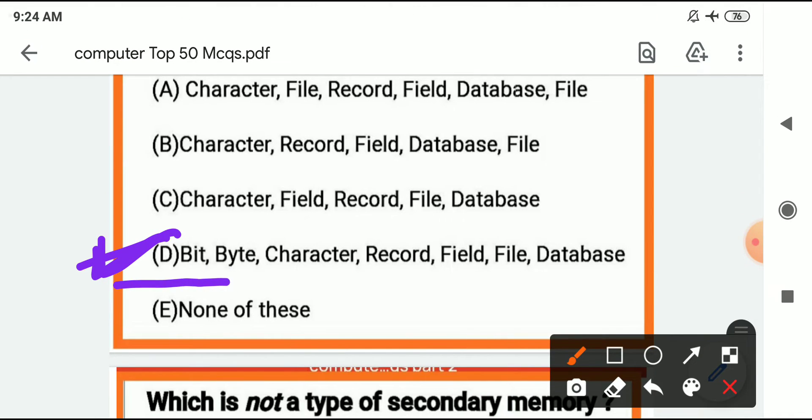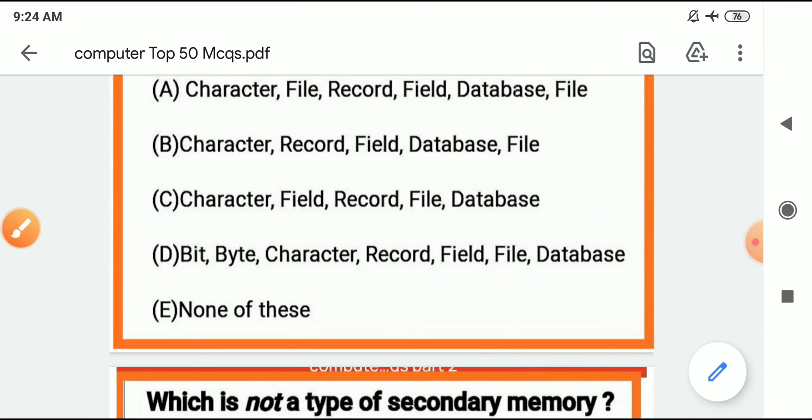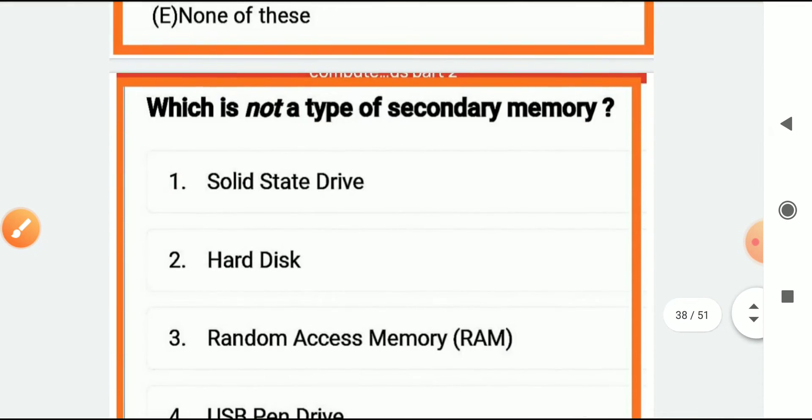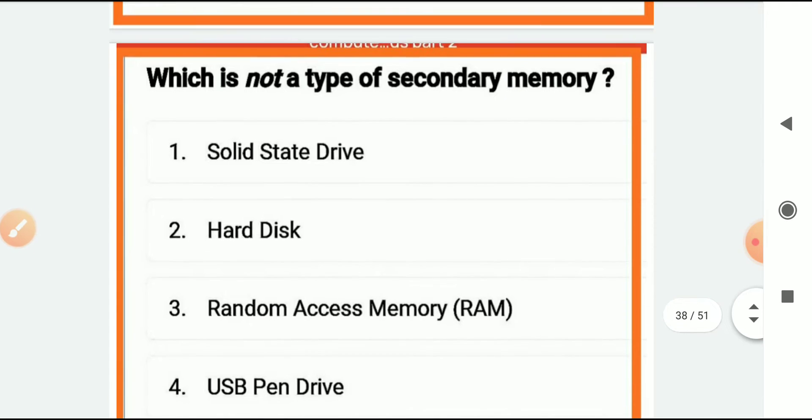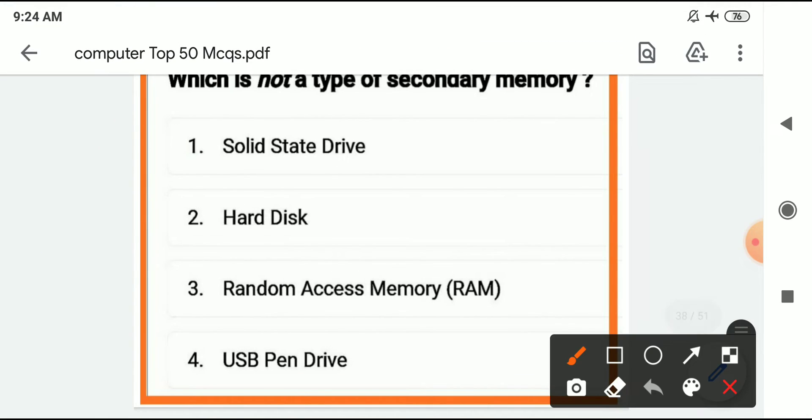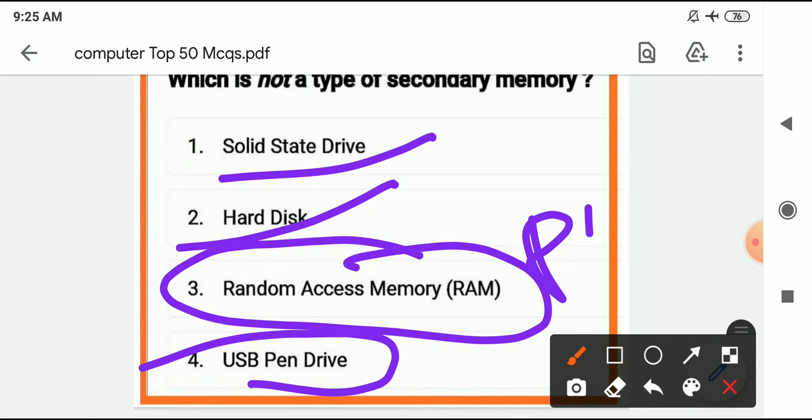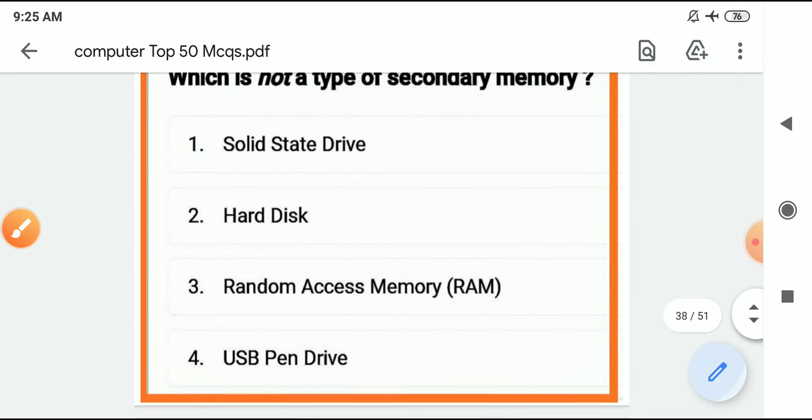Which is not a type of secondary memory? CD is secondary, hard disk is secondary, pen drive is secondary, but RAM is primary memory. RAM is not secondary memory.